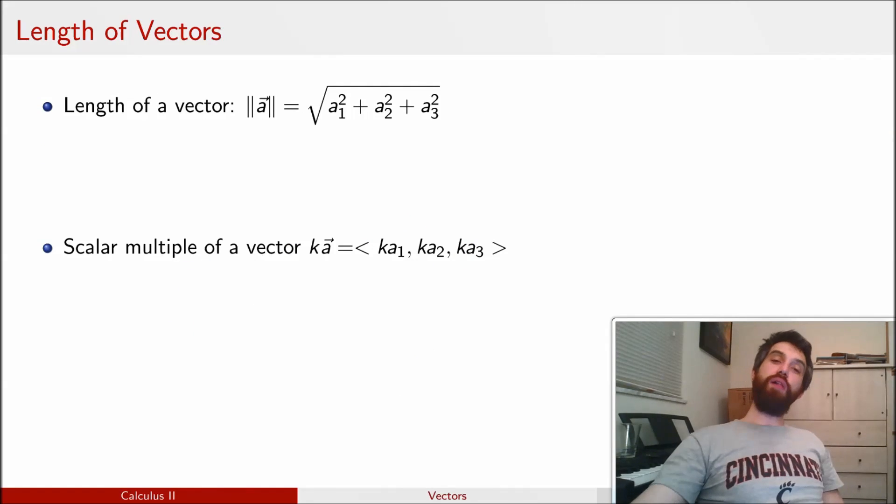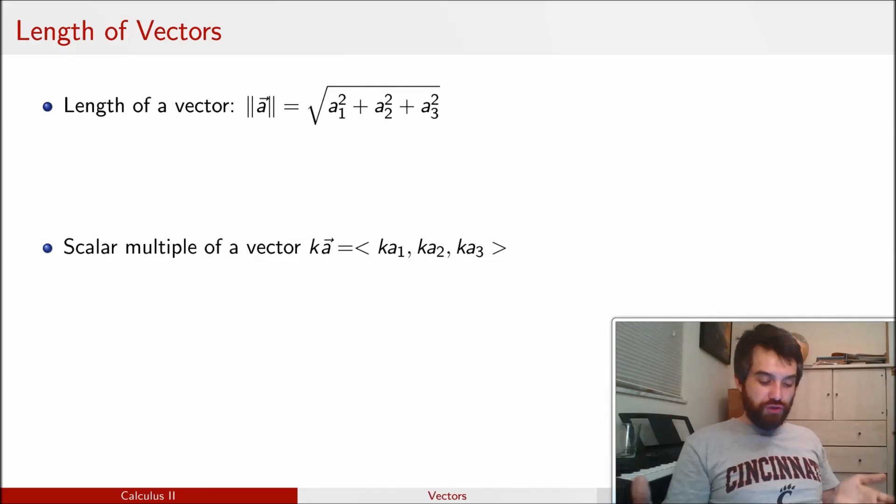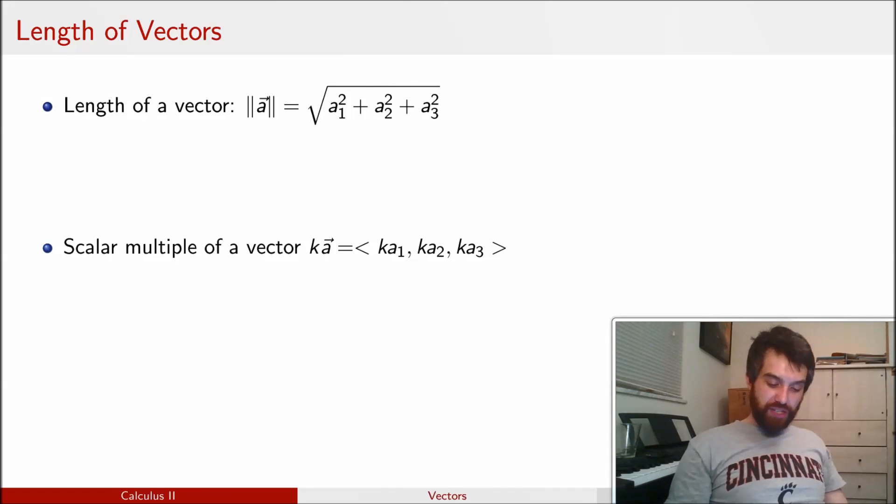A couple of different facts about vectors. First of all, the length of a vector. I have a formula that should seem a little bit familiar to us. If there was only two components, just an a₁ and an a₂, the square root of a₁ squared plus a₂ squared, that's just the Pythagorean formula. The length of the hypotenuse of a triangle, if it's a right triangle, is given by the Pythagorean theorem. And indeed, I get the exact same analog. It's like a generalized Pythagorean theorem. So we can imagine, for instance, that the length of the vector ⟨1, 2, 2⟩ is just going to be the square root of 1 squared plus 2 squared plus 2 squared, which is the same thing as the square root of 9, which is just equal to 3.